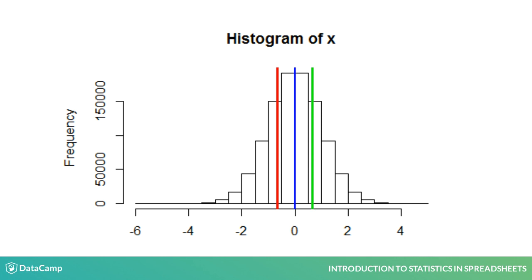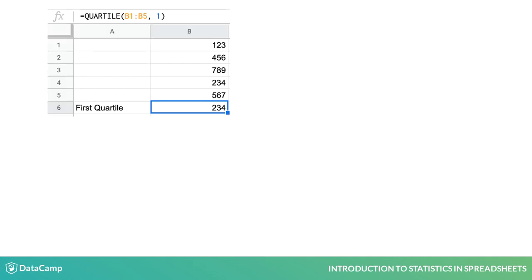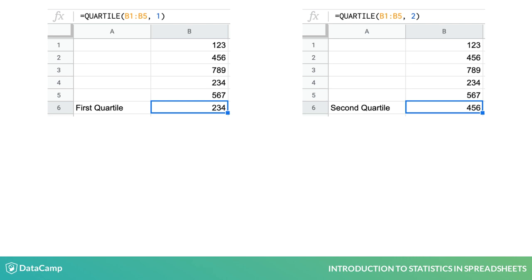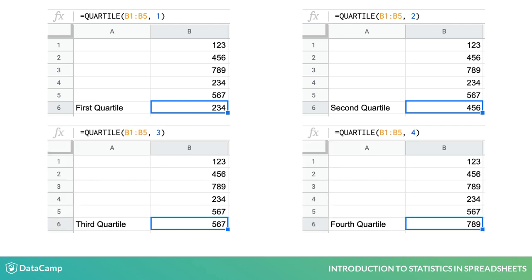To get the popular percentiles in Sheets, use the QUARTILE function, accepting an array then a number one through four to specify the quartile. As you can see here, the first quartile is 234, the second is 456, the third is 567, and the fourth is 789.